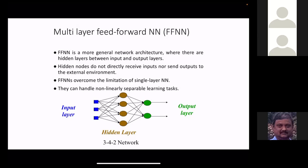The objective function for this optimization uses supervised learning: you have a training set where both input and output are known. For yield prediction, for example, you take the last 15 years of crop data with known inputs and known actual yields. This forms a supervised training set. You find the set of weights for this neural network such that the difference — or mean square error — between the actual prediction and the desired output is minimized.